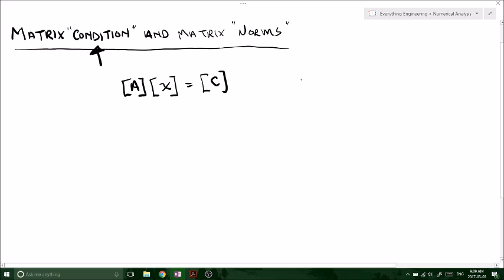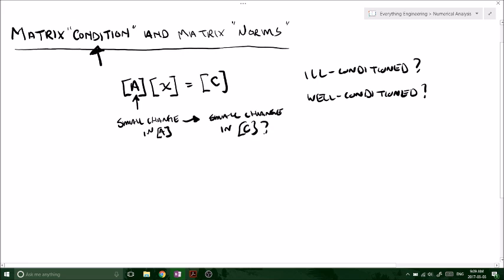It says basically, let's suppose we make a small change in A. How will that affect our solution vector? Will we still get a small change or will we get a large change in c? So if we make a small change in A, does that result in a small change in c or a big change in c? And vice versa, we can make a small change in c, the solution vector, and how will that affect our matrix A?